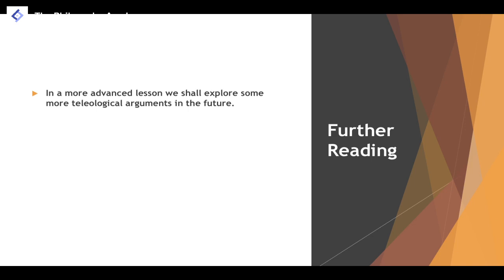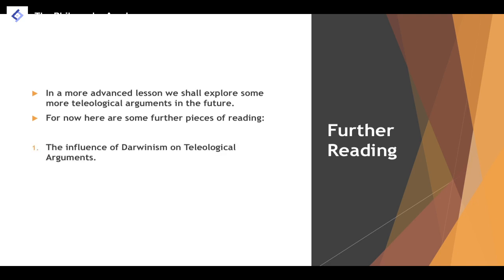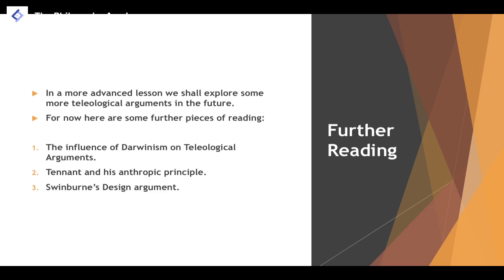For further reading on the teleological argument, you could explore the influence of Darwinism on teleological arguments and how it has impacted their understanding. You could also look at Tennant and his anthropic principle, which we will examine in a more advanced lesson, as well as Swinburne's design argument, which attempts to get around these critiques. In the next lesson, we're going to talk more specifically about Immanuel Kant and his moral arguments.